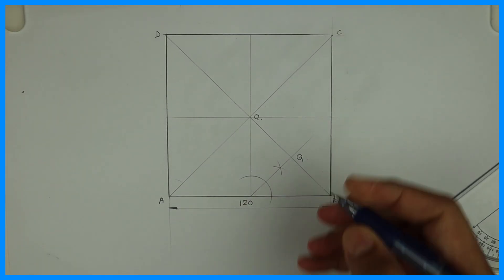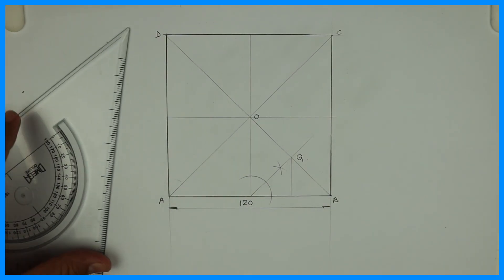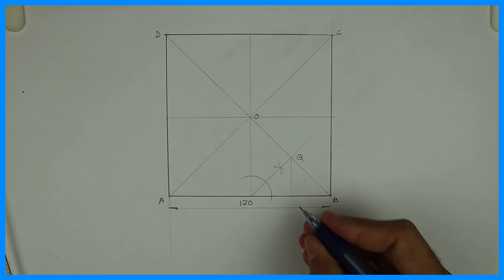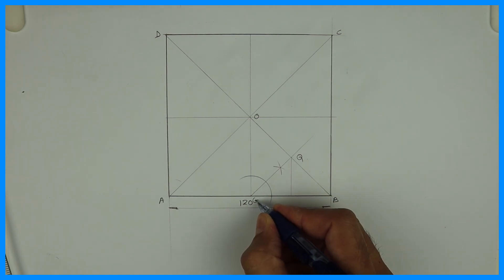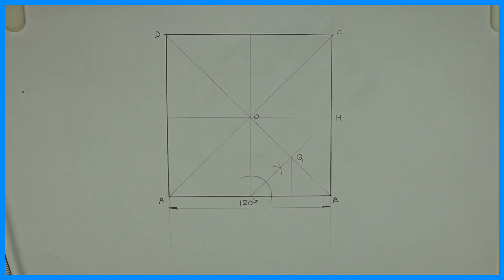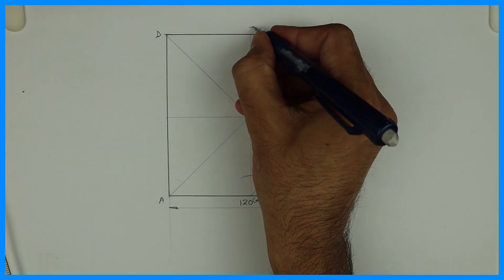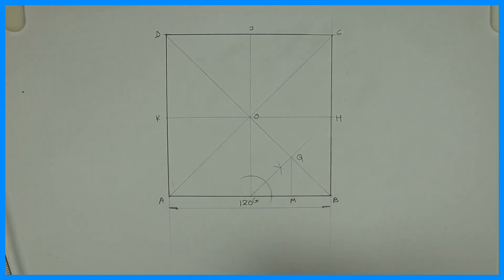So this is point Q. From Q you go down. Let's say this is point, let's say this center point is G, H, right. J, N, K. This is M.